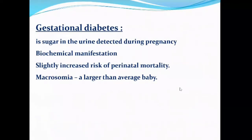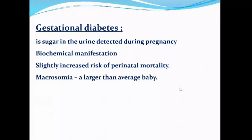Gestational diabetes, on the other hand, is sugar in the urine detected during pregnancy. It is considered a biochemical manifestation rather than a disease as such. Women with gestational diabetes have a slightly increased risk of perinatal mortality, not as high as women with type 1 or type 2 diabetes. The most important adverse outcome for women with gestational diabetes is macrosomia, which is a larger than average baby.